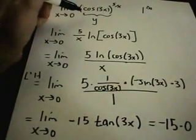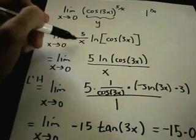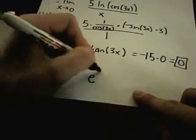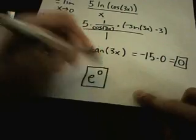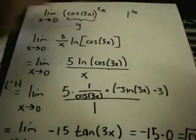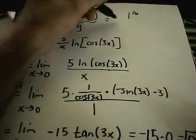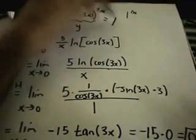But again, I'm not done. I have to remember that really I didn't find the limit as x approaches 0 of the original thing — I did the natural log of the original thing. So just like before, your final answer: take e and raise it to your solution. And e to the 0 is just 1. So the limit as x approaches 0 of cosine(3x) raised to the 5/x is equal to 1.